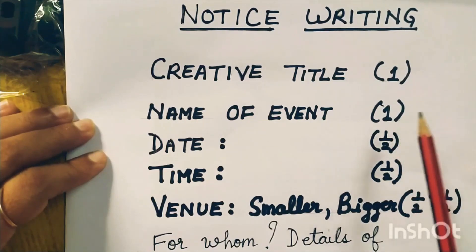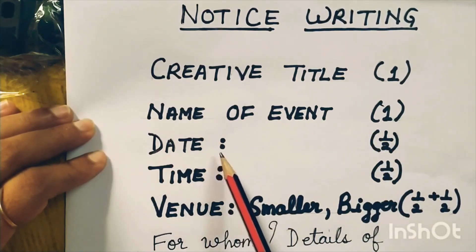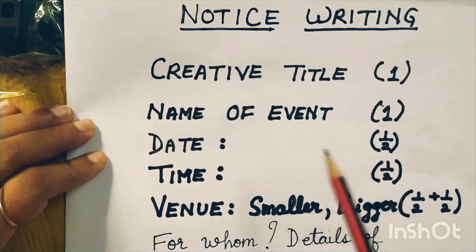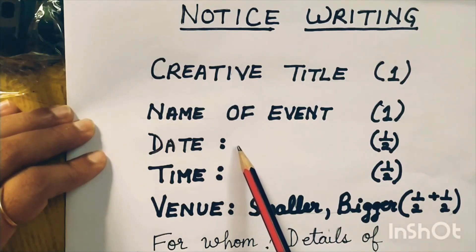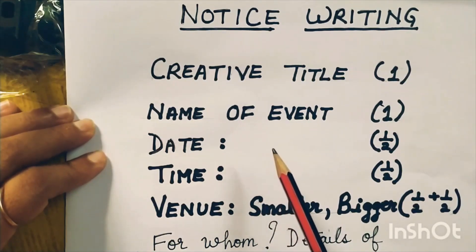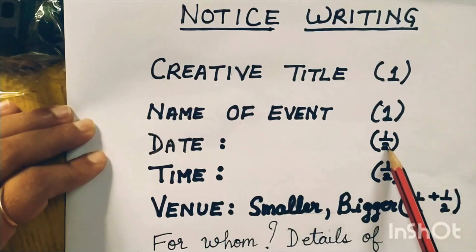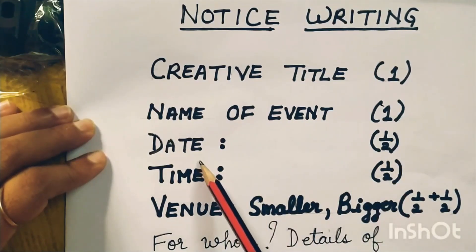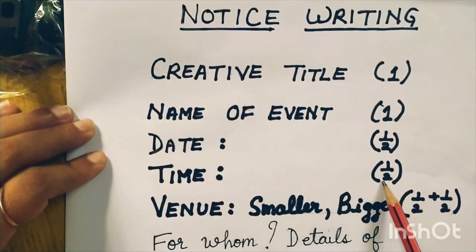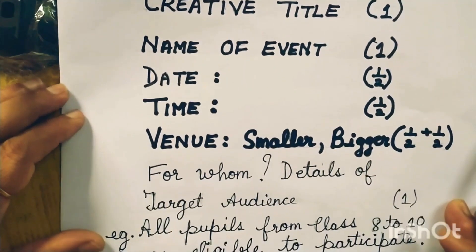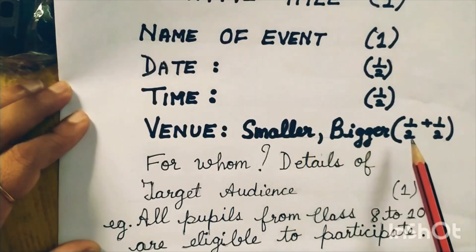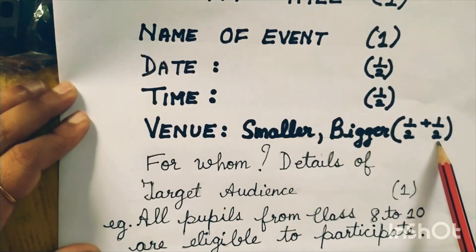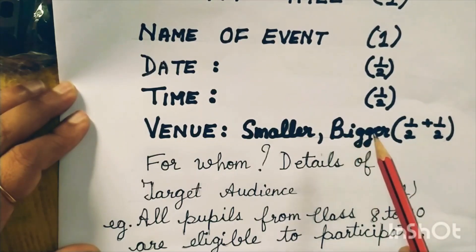The name of the event also carries one mark. After this, leave another line, then write down the date of the event, which carries half a mark. This date has to be 15 days in the future — the event will take place after 15 days. Then leave a line after the date and write the time, which also carries half a mark. Then give the venue. There have to be two venues, from smaller to bigger. The smaller venue carries half a mark and the bigger venue also half a mark. Do not write the bigger venue before the smaller — you will not get marks.